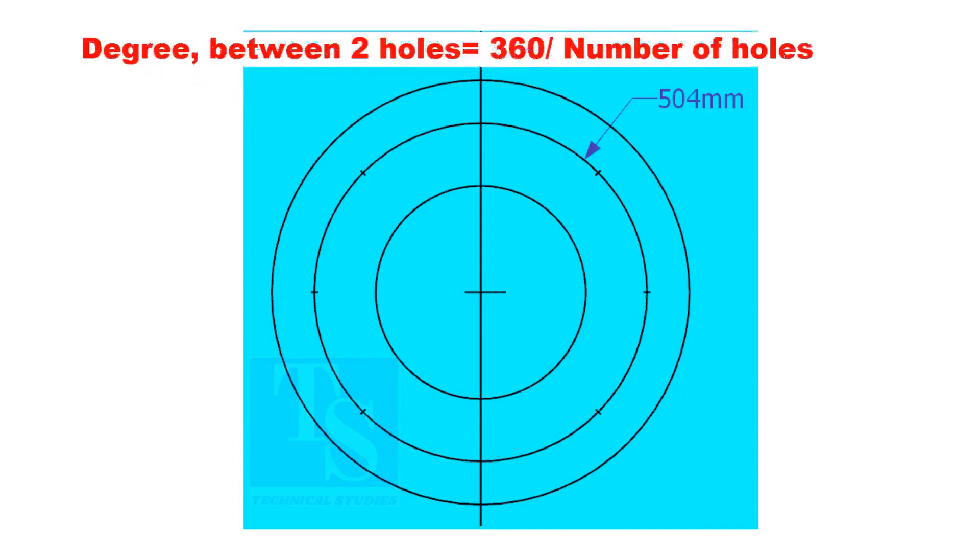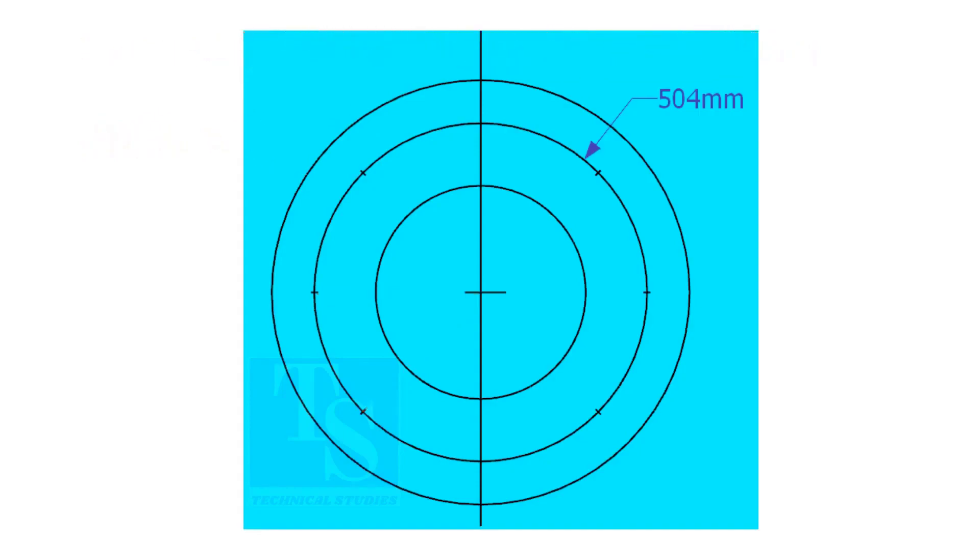If you divide 360 by the number of holes, you will get the angle between two holes. Cord length equals sine 45 divided by 2 multiplied by PCD.